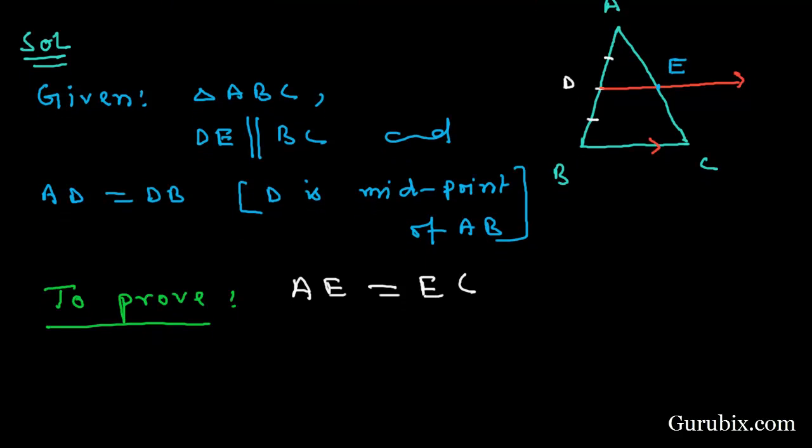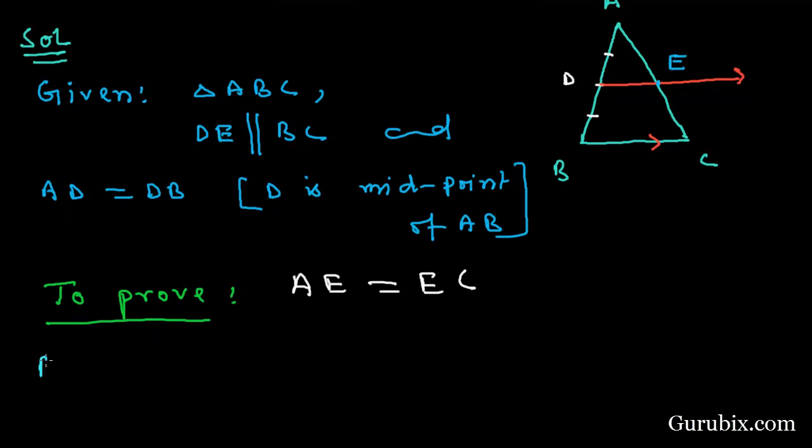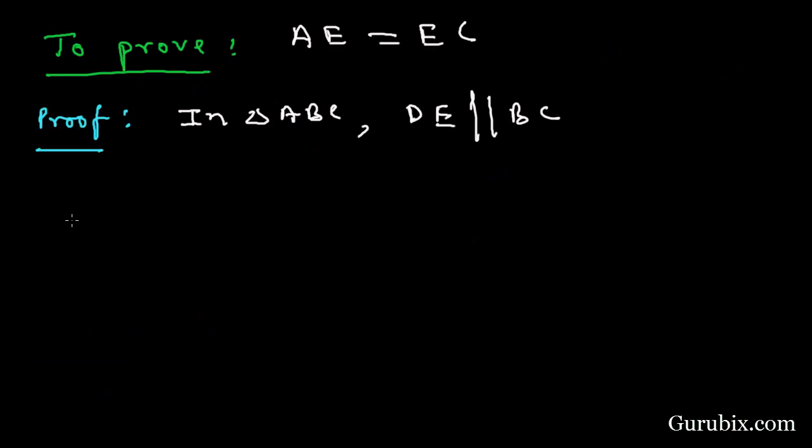Let us see how to do it. Here we have the proof. In triangle ABC, we are given DE is parallel to BC. Therefore, by the results of BPT, AD over DB equals AE over EC.